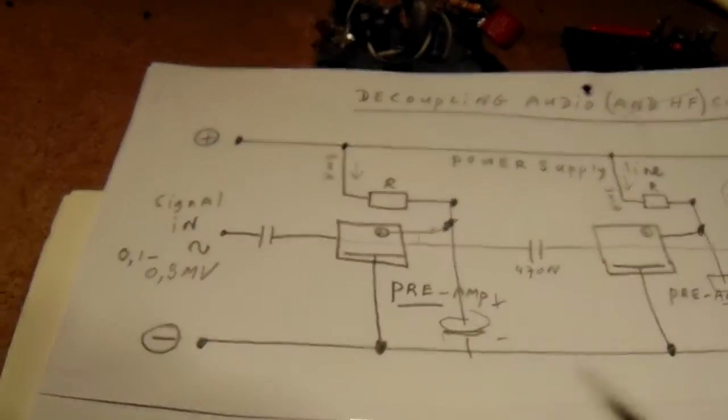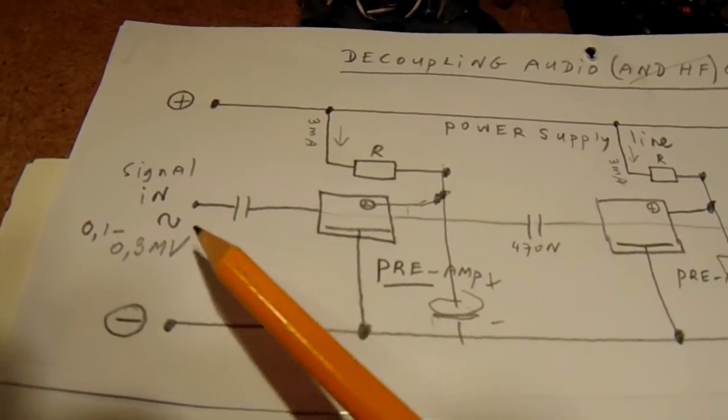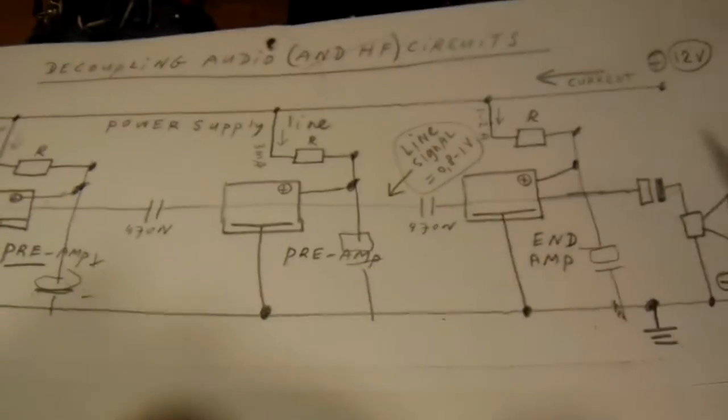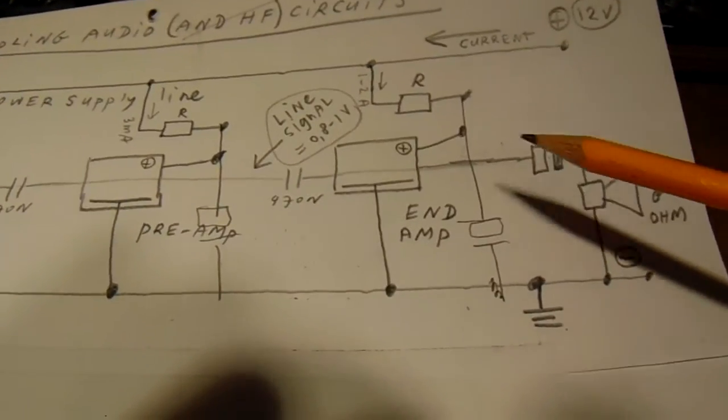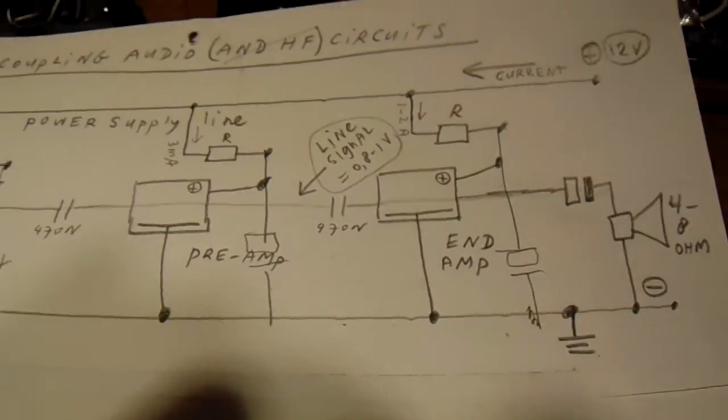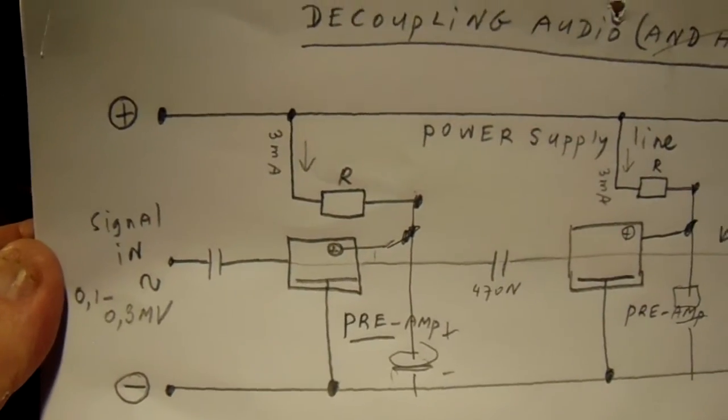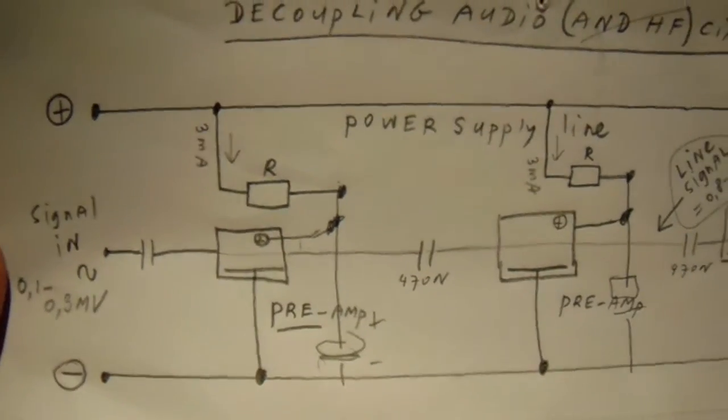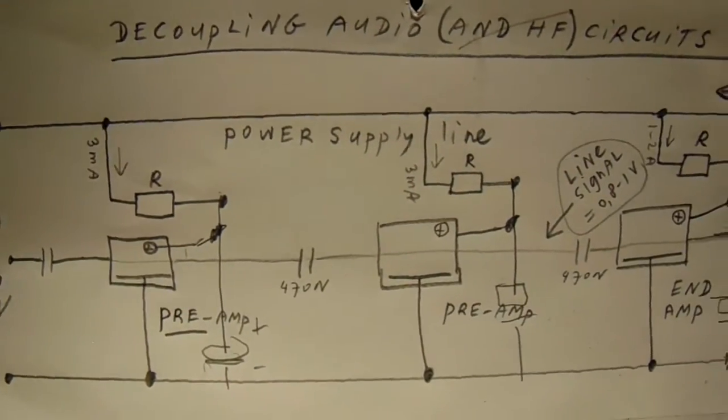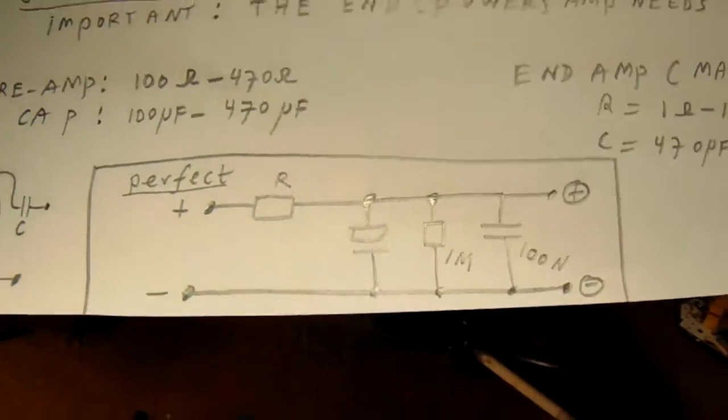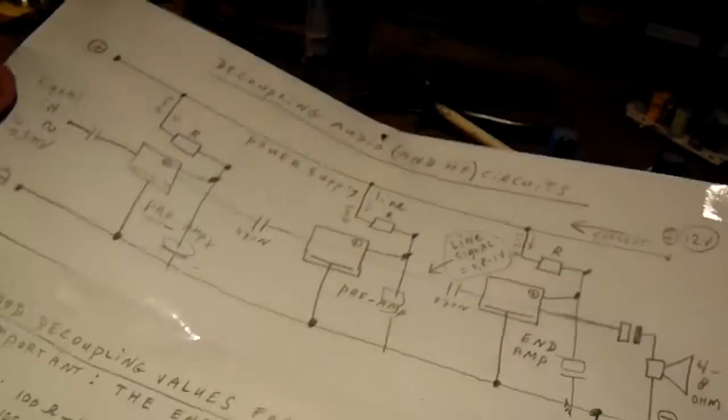So here we see the audio signal traveling through all the three stages, powerfully amplified here in the end amp. But all these three amplifier stages are decoupled. That means that they don't influence each other. And when you want to do it very perfect, this is the best circuit to make.